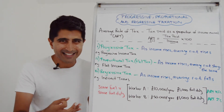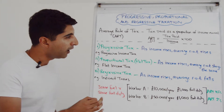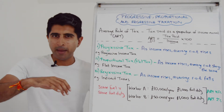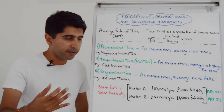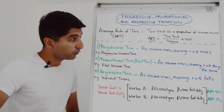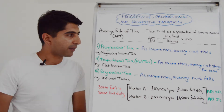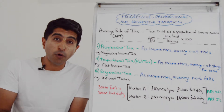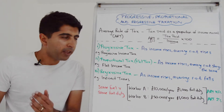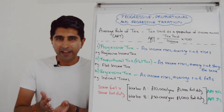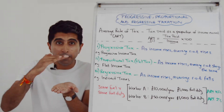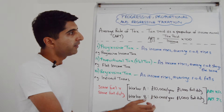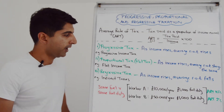So now having understood that, let's get into these three different types of taxes. Starting with a progressive tax — a good example is a progressive income tax. Many countries around the world have this type of tax system. This is a tax where as income rises, the average rate of tax goes up. So as people get richer, the amount of tax they pay as a proportion of their income will go up. In a progressive income tax system, that's because as people earn more, they end up in higher tax bands where the tax rates are higher, so the amount of tax they pay as a proportion of their income goes up.